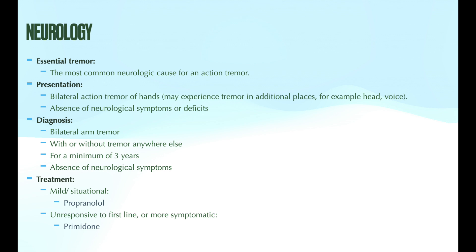Generally, the textbook essential tremor would be bilateral tremor of the hands. Patients can also realize that their symptoms improve with a little bit of alcohol, showing that they are able to suppress those symptoms. Diagnosis of essential tremor is made clinically with patients presenting with four characteristics: one, bilateral arm tremor; two, with or without tremor in other locations; three, for a minimum of three years; and four, without neurological signs or symptoms.